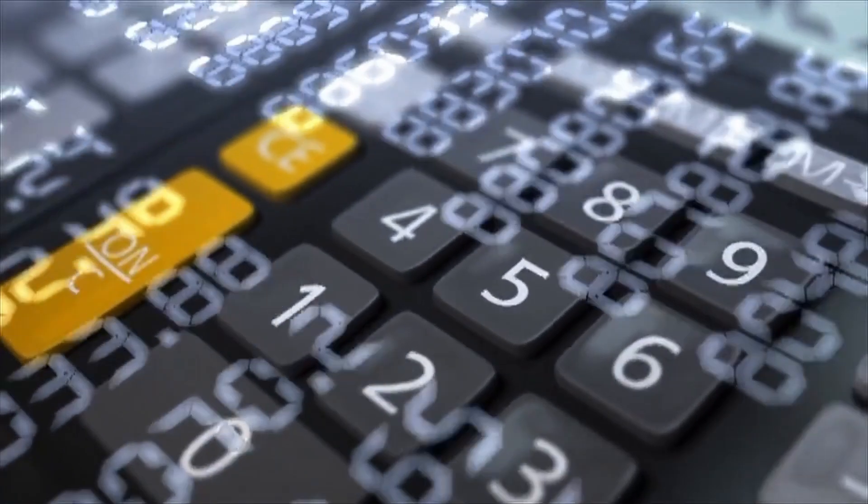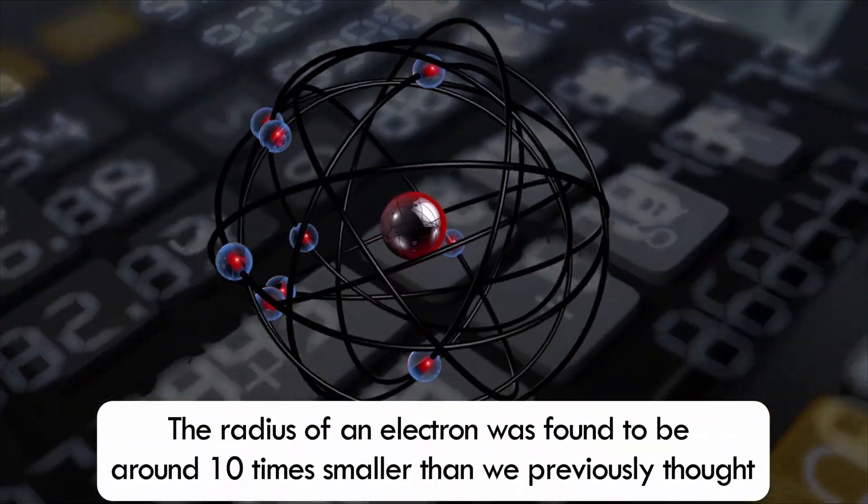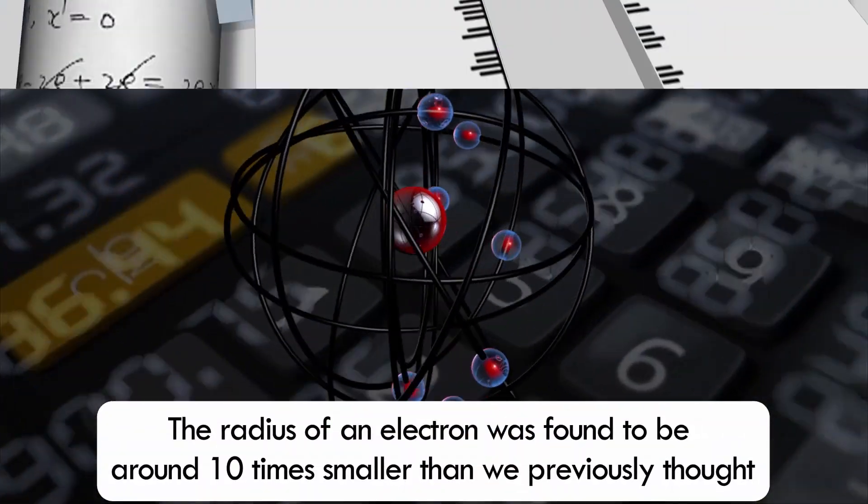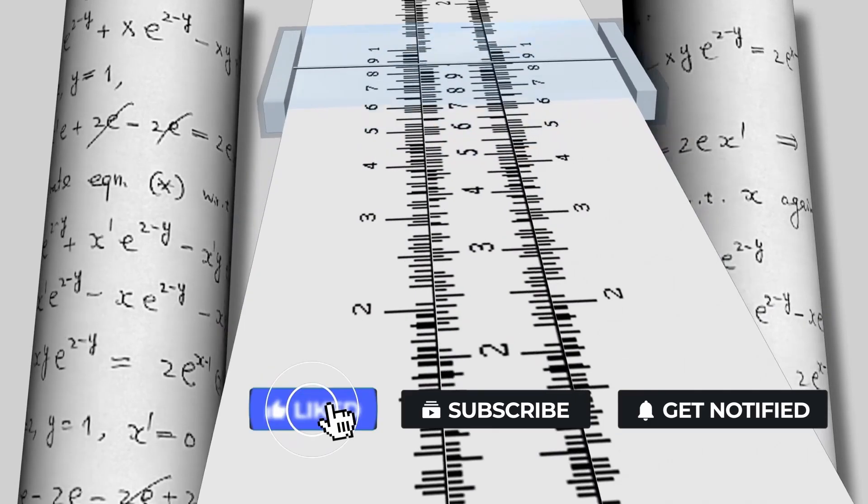Using these ratios, we find the radius of an electron to be around ten times smaller than we previously thought—a billionth of a billionth of a centimeter.